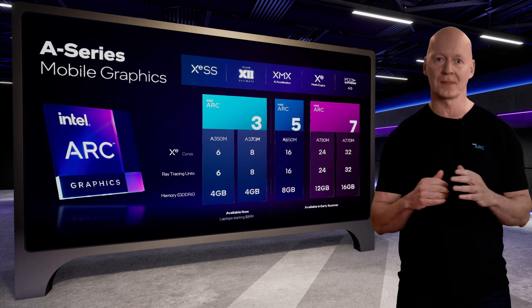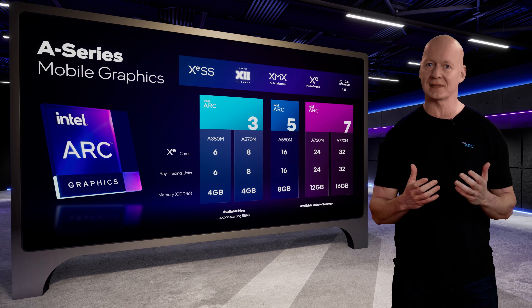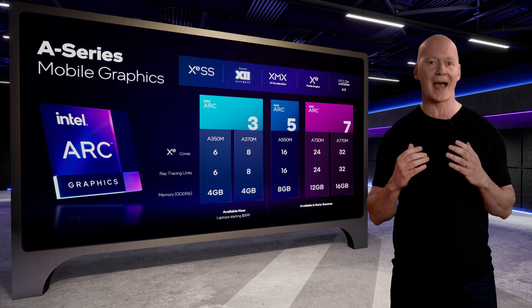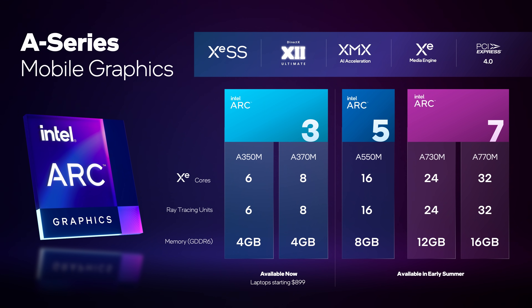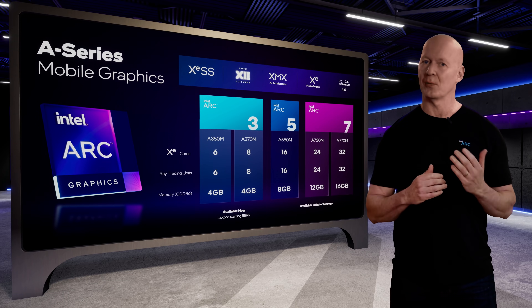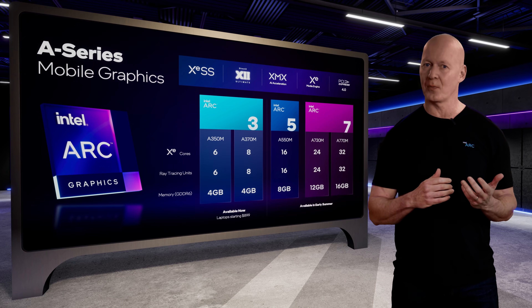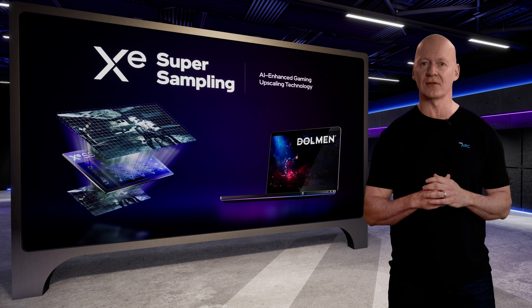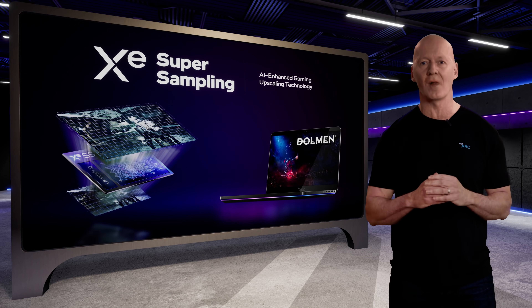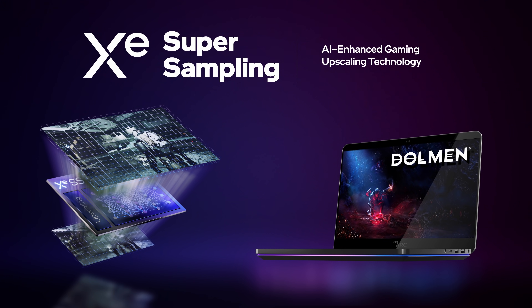Coming this summer, Arc 5 and Arc 7-based laptops will be packed with even more: more Xe cores, more fixed-function ray tracing acceleration, more GDDR6 memory, and ultimately more performance. They will also ship with a new technology designed to deliver more efficient performance, which we call Xe Super Sampling, known as XESS.